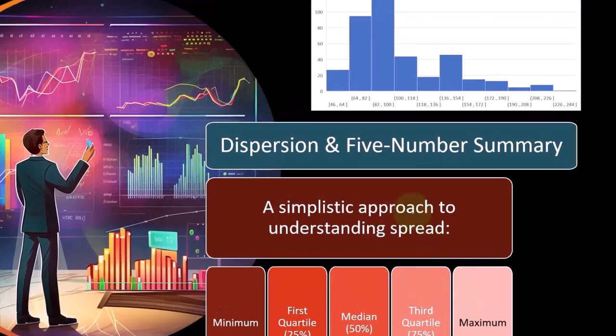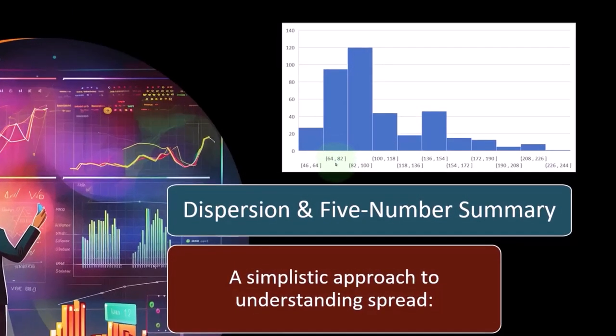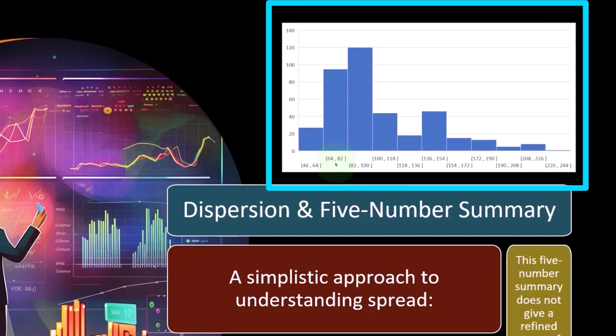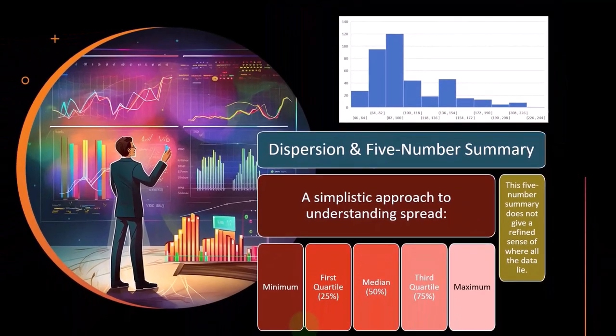And if you look at a histogram, for example, and you imagine those five numbers, you could say, okay, I kind of get an idea of the spread of the data. However, there are limitations to how much of a concept of spread you're getting with this five-number summary.